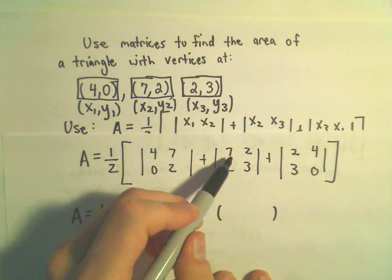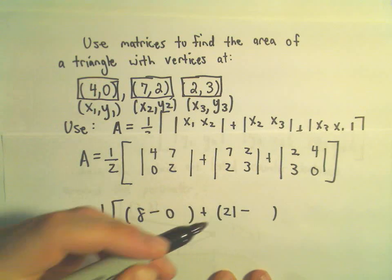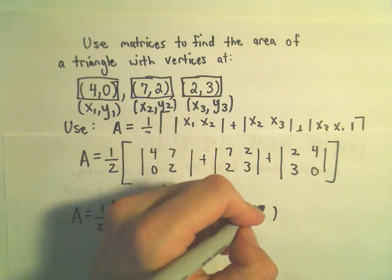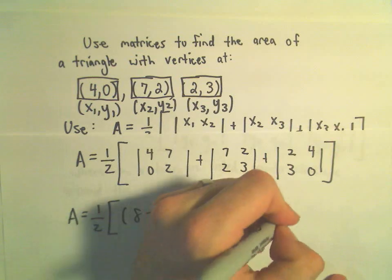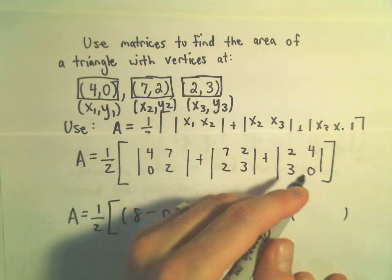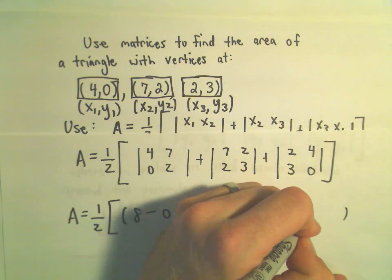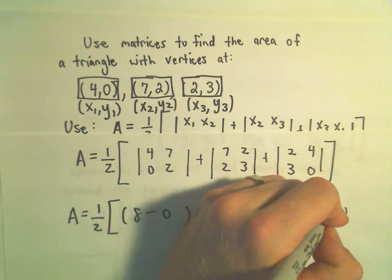Our next determinant will get 7 times 3, which is 21, minus 2 times 2, which is 4. And then our last determinant will get 2 times 0, which is 0, minus 3 times 4, which is 12.